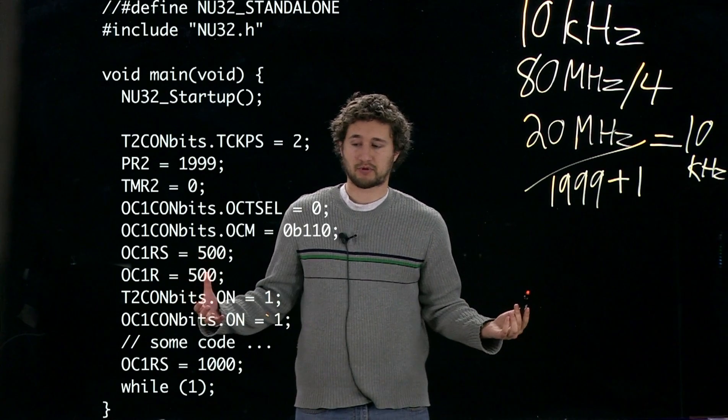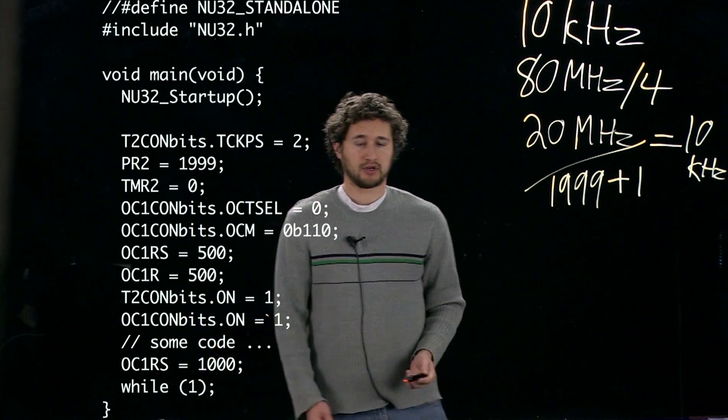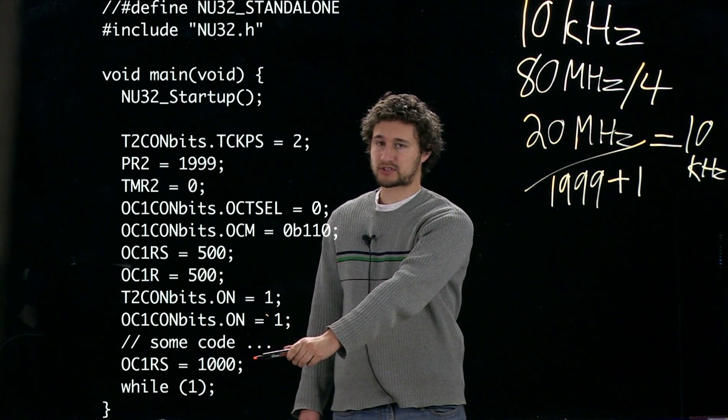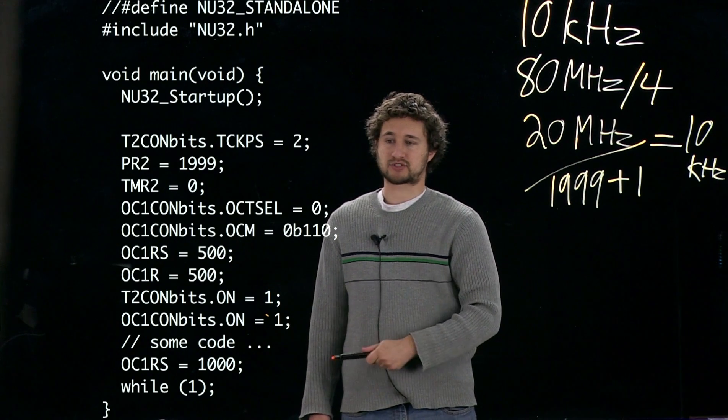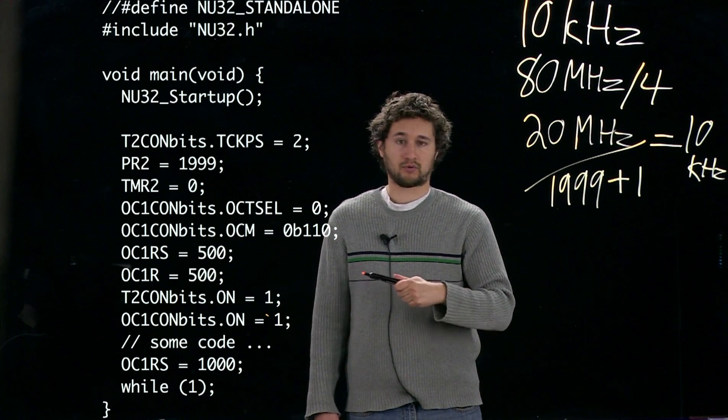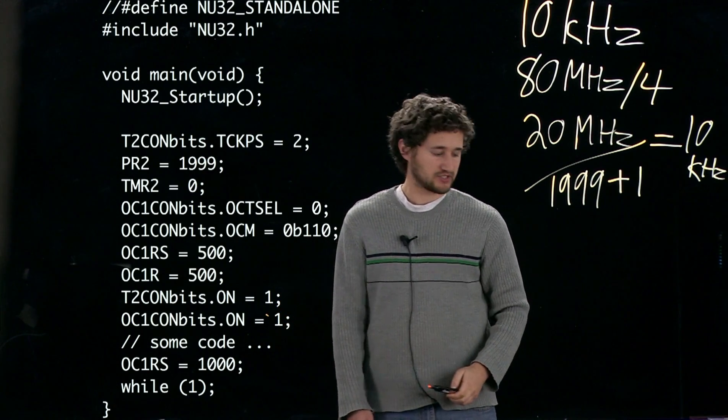Finally, we might do some other code. Let's say we want to change the duty cycle to 50%. Well, then what we're going to do is set OC1RS to 1000. On the next time timer 2 rolls over, 1000 will be loaded into OC1R, and that will give us a 50% duty cycle.